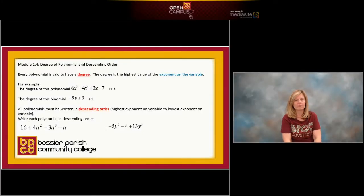We're now in Module 1.4, and our vocabulary words for today are degree and descending order. Let's talk about degree first. Every polynomial is said to have a degree. The word degree means the value of the biggest or highest exponent on the variable.